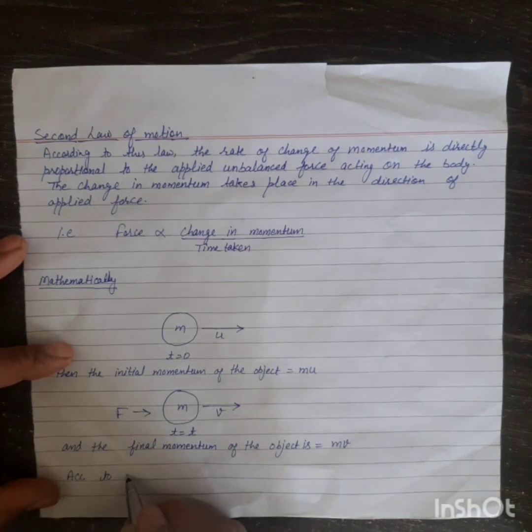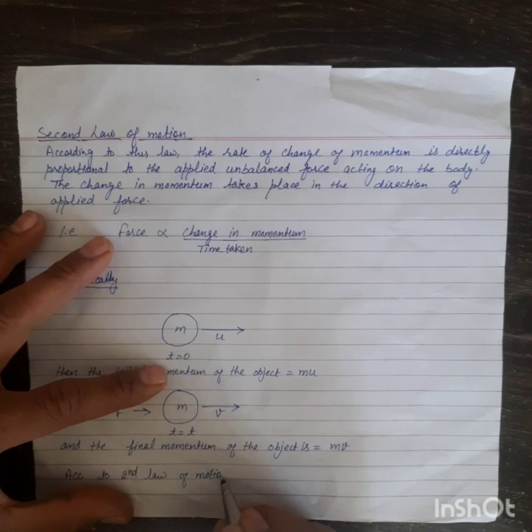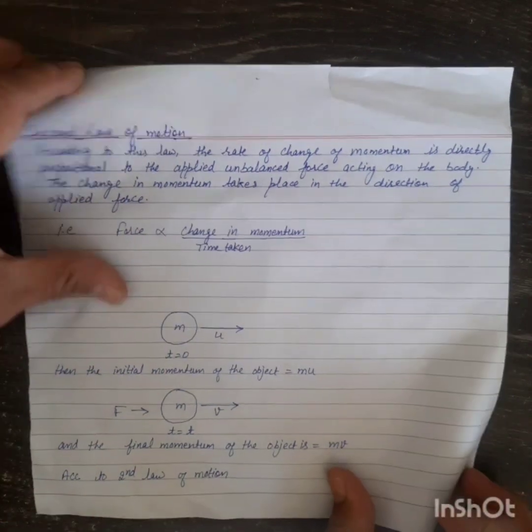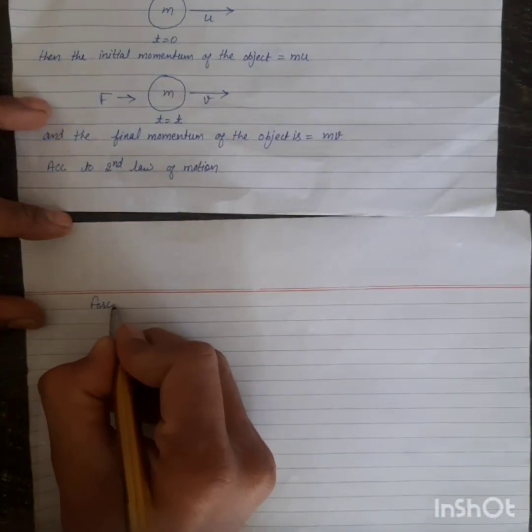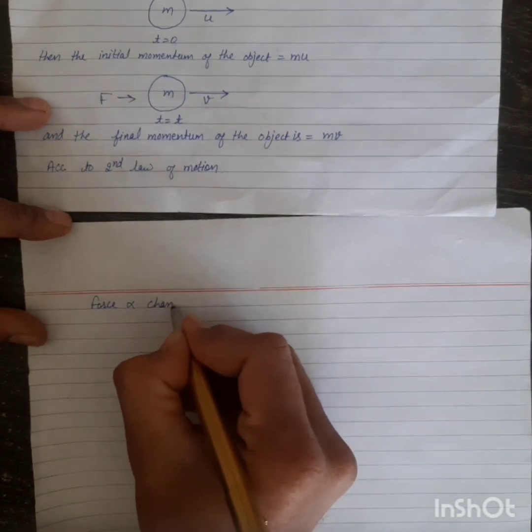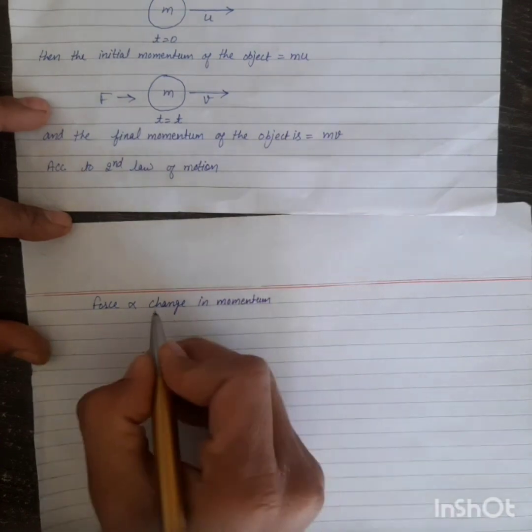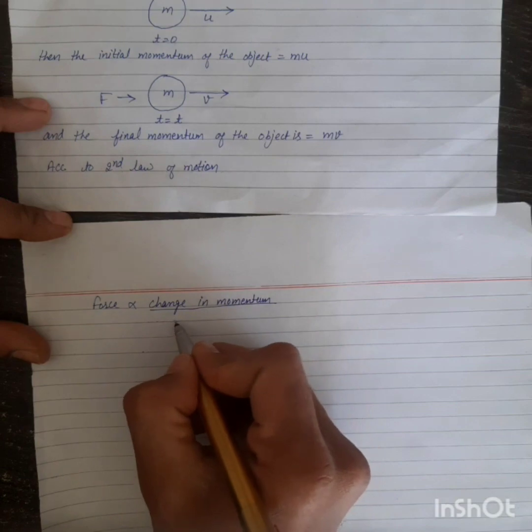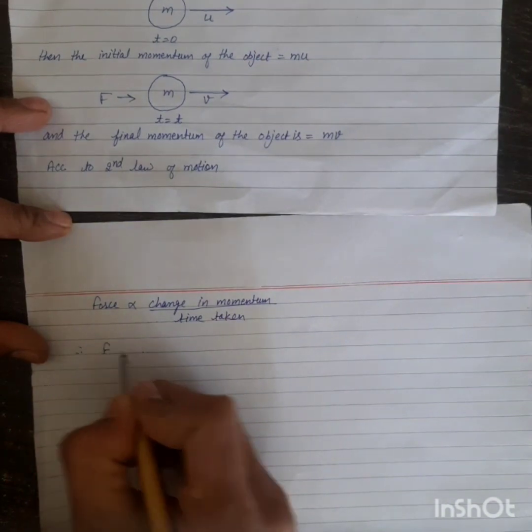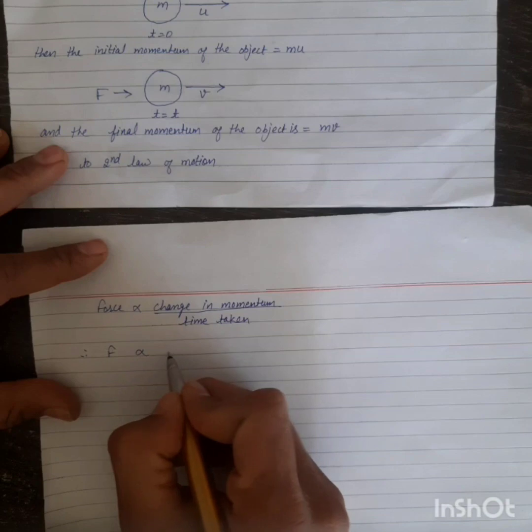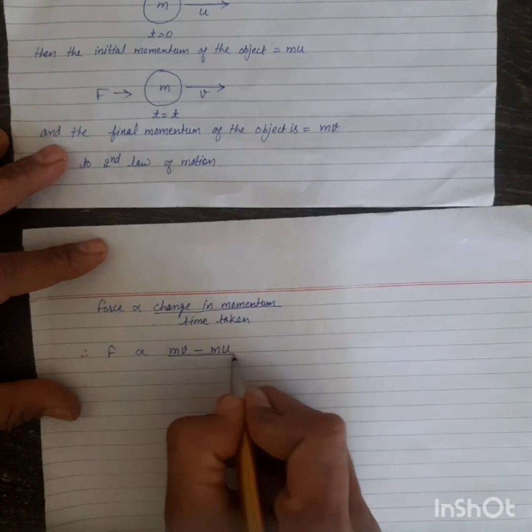According to second law of motion, force is directly proportional to change in momentum divided by time taken. Therefore, force F is directly proportional to change in momentum, that is final momentum minus initial momentum, divided by time taken.